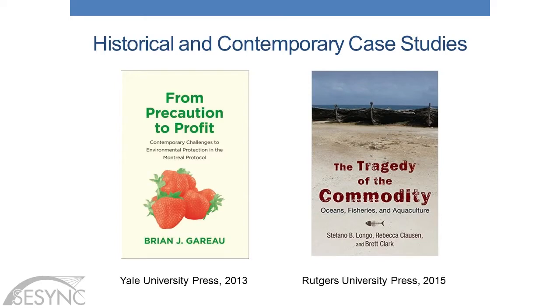Two examples, one contemporary and one historical. Brian Guerreau did a really interesting contemporary case study on the Montreal Protocol, focused on strawberry production and methyl bromide in California. It's a lens for understanding how environmental governance does and does not work in the context of the Montreal Protocol by focusing on this particular case and locale. It came out a few years ago — I highly recommend it. He's also my colleague at Boston College, but that's not why I'm bringing it up; it's a very good book.